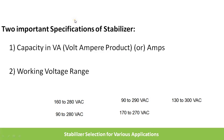These are the two important specifications of a stabilizer. The first is capacity, given in VA or amps. For lower capacities it is specified in amps, and for higher capacities the stabilizer is generally specified in VA or kVA.